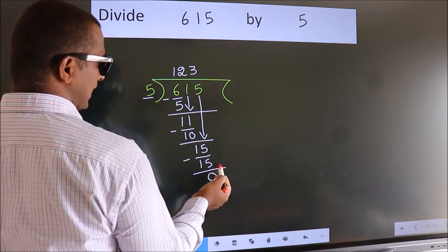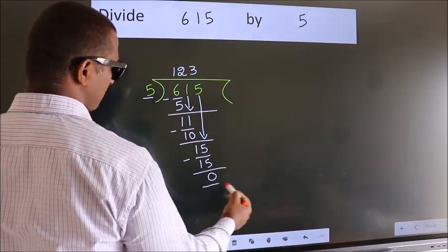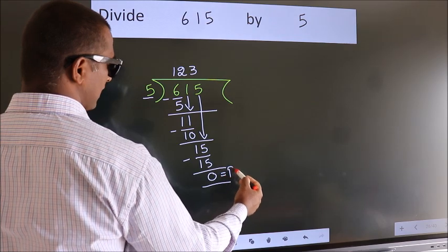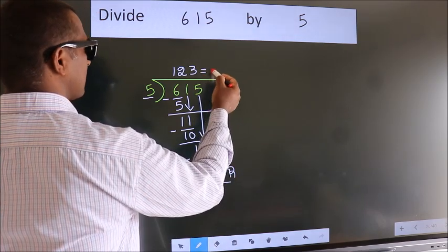No more numbers to bring down. So, we stop here. This is our remainder. This is our quotient.